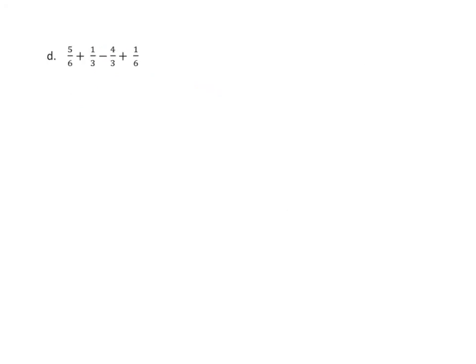Now here we have a mix of operations. And again, we can see at the end here, at the end we are simply going to add this one-sixth. So again, we can add this one-sixth right to the front here, and then we can do the rest of our operations. Now I also notice that we have thirds here as well. So let's start by writing five-sixths plus one-sixth, then we can put plus one-third minus four-thirds.